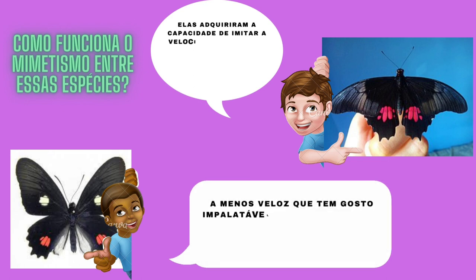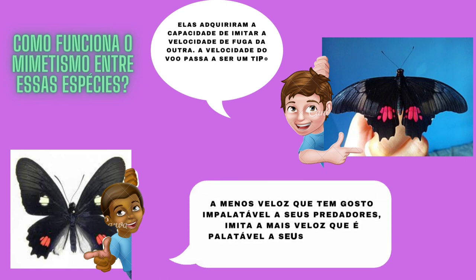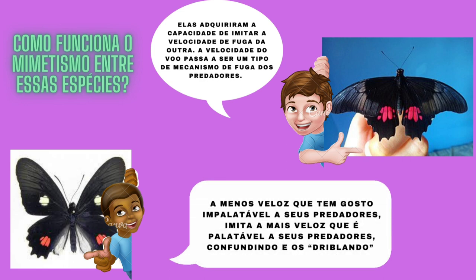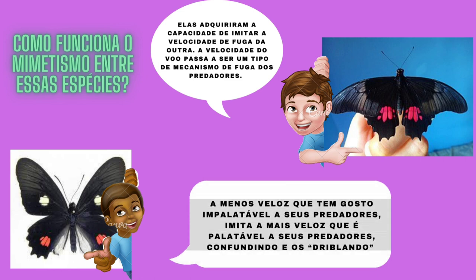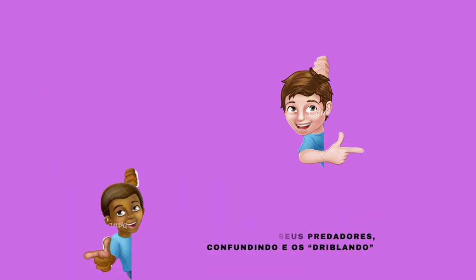De acordo com a pesquisa do docente, a velocidade do voo passa a ser um tipo de mecanismo de fuga dos predadores. No par mimético, Parides anchises nephalium e Heraclides anchisiades capes, a primeira tem o voo lento e o gosto desagradável, e essa imita a segunda, que tem o voo rápido e o gosto bom. Sugere-se que uma espécie impalatável, que seria desagradável ao paladar, pode mimetizar uma espécie palatável, que seria agradável ao paladar, segundo a pesquisa do docente André Freitas.